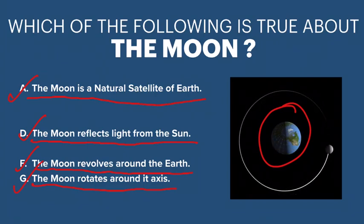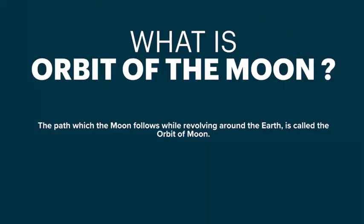Now let's learn something new. The question is: what is the orbit of the moon? The definition is — the path which the moon follows while revolving around the earth is called the orbit of the moon. In other words, the path the moon travels as it goes around the earth is its orbit.